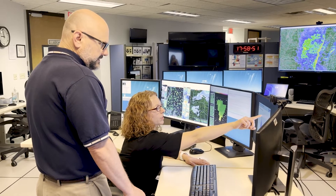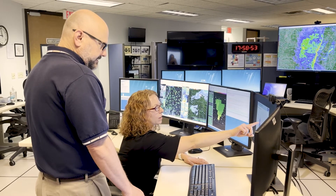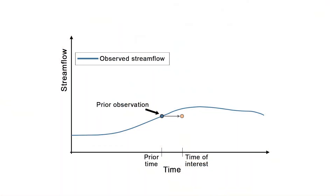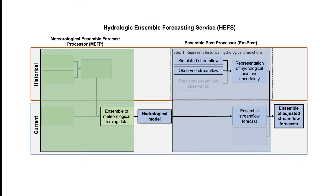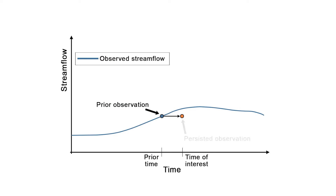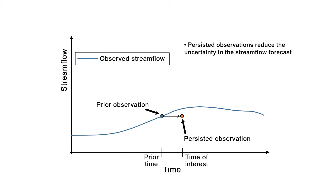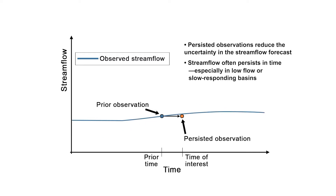The third piece of information needed to represent historical hydrological bias and uncertainty is a prior observation carried forward in time, referred to as a persisted observation. This is analogous to a persistence forecast. ONSPOST uses the persisted observation to reduce the uncertainty in its final adjusted streamflow, since streamflow often persists in time, particularly at low flows or in slow-responding river basins.